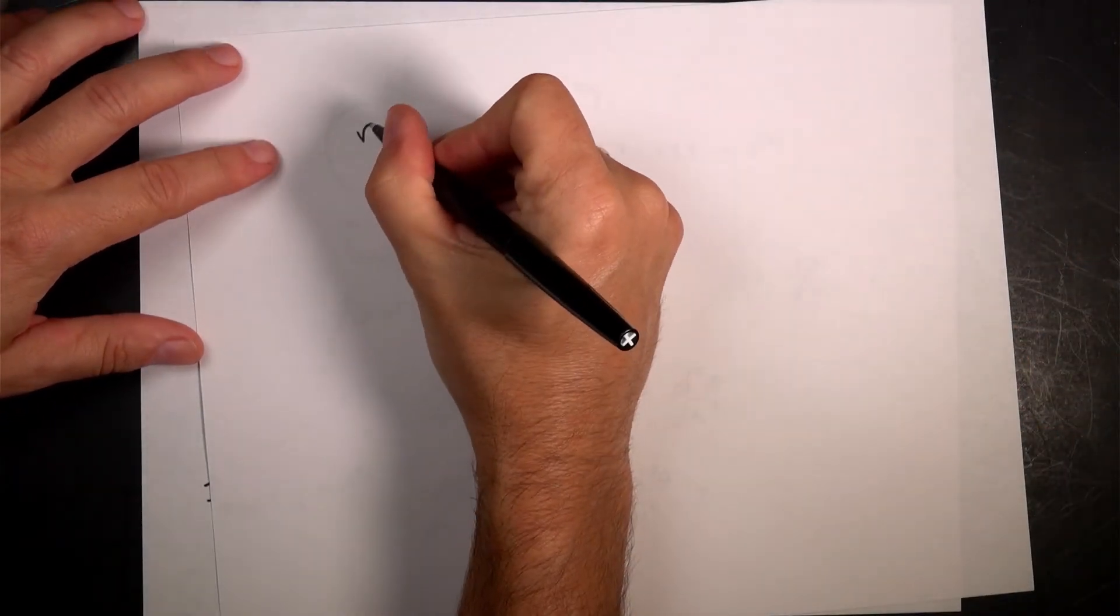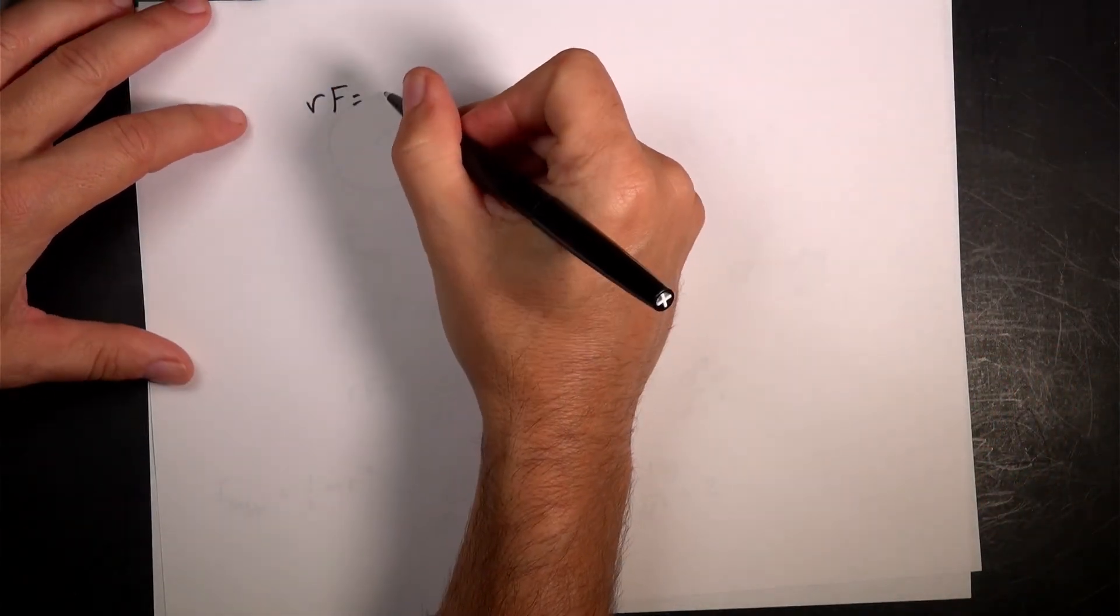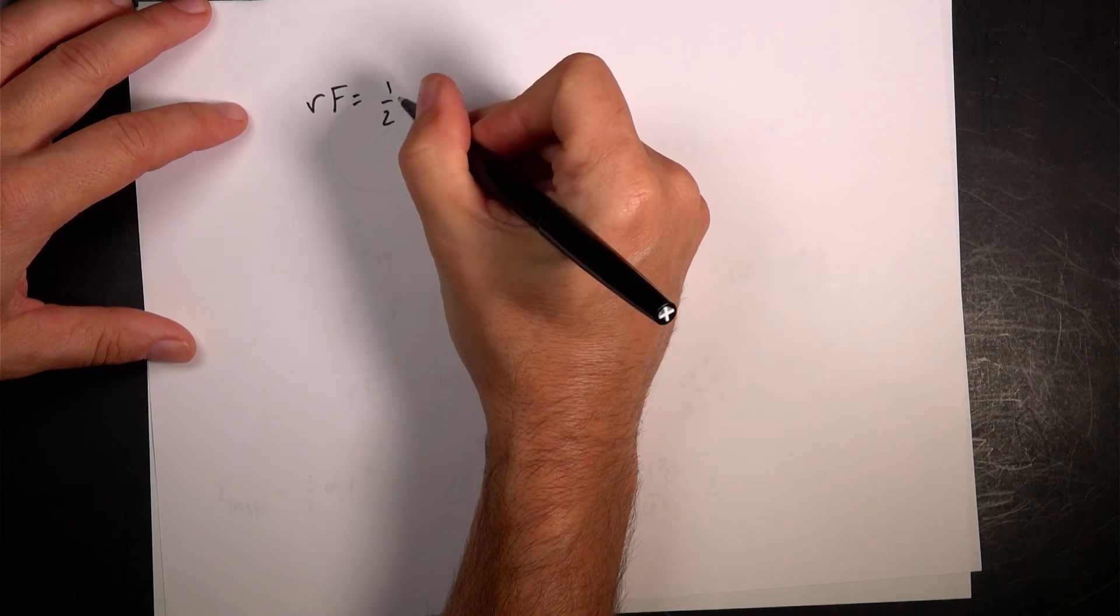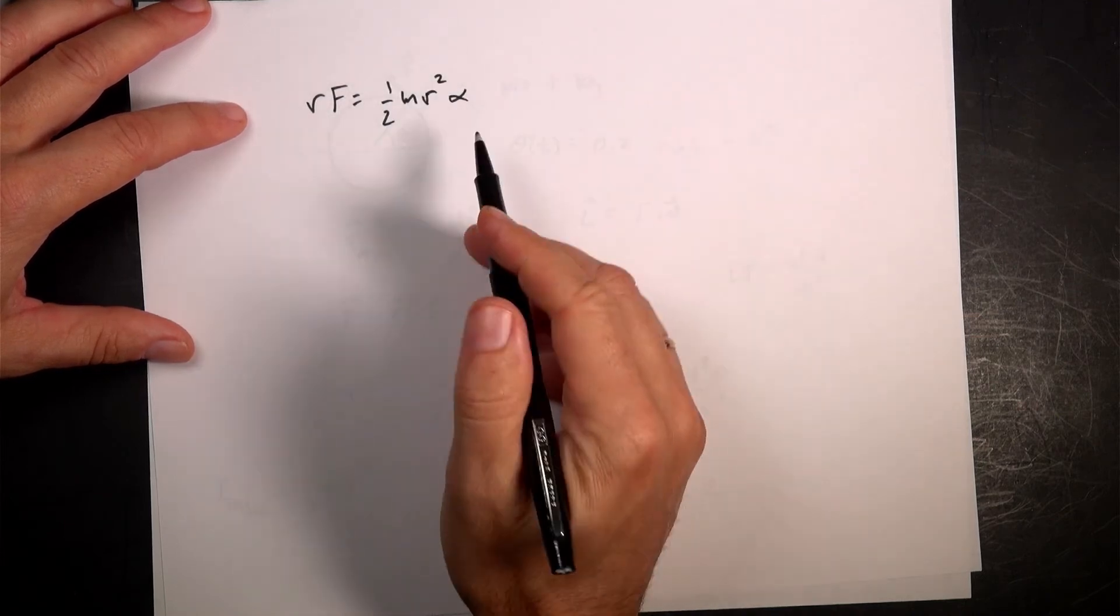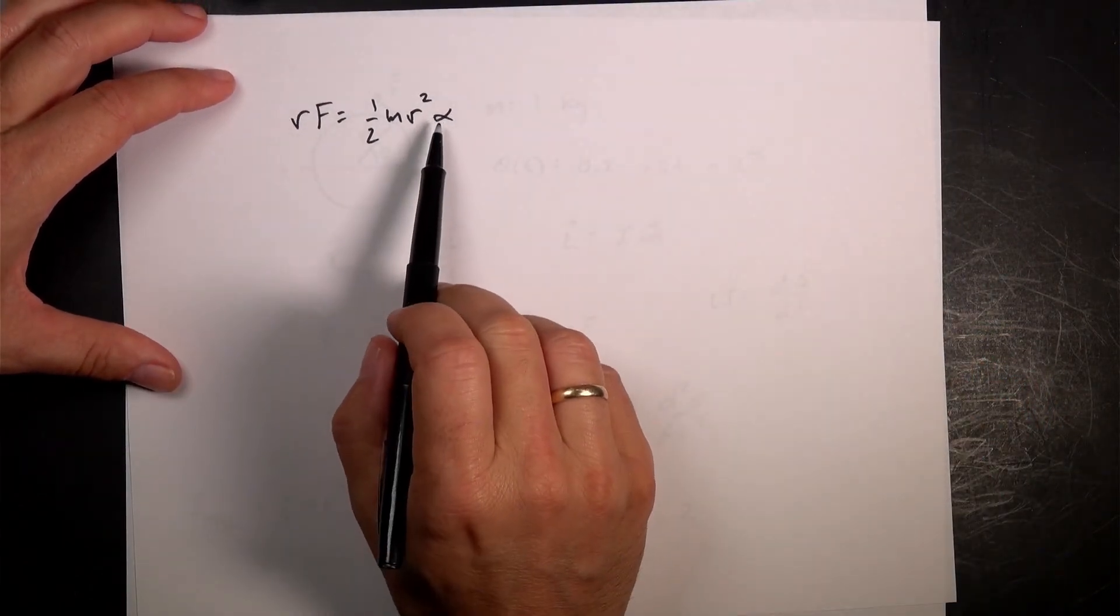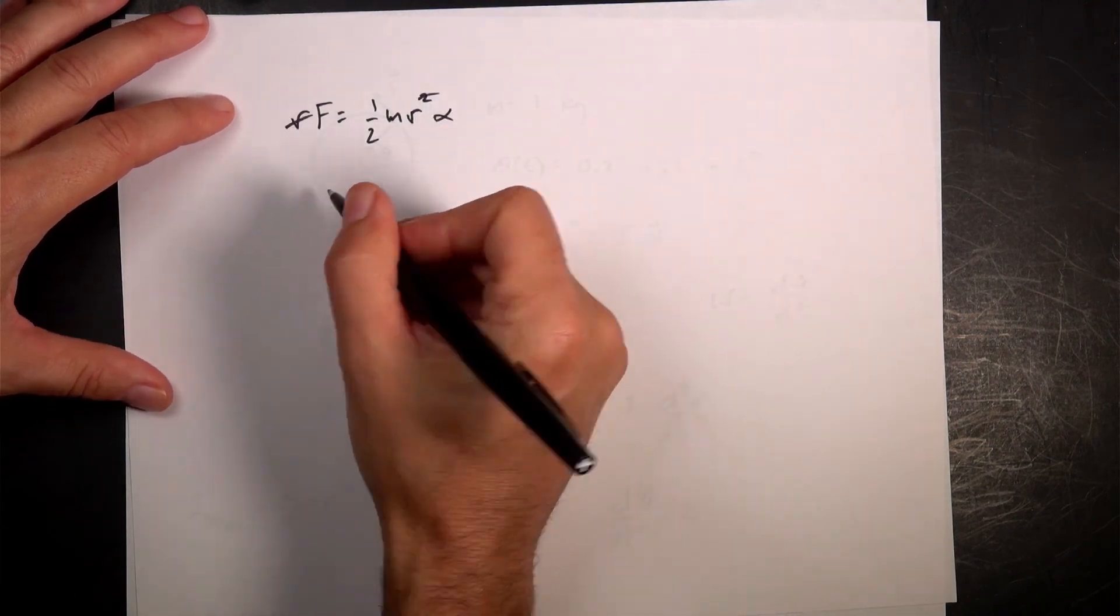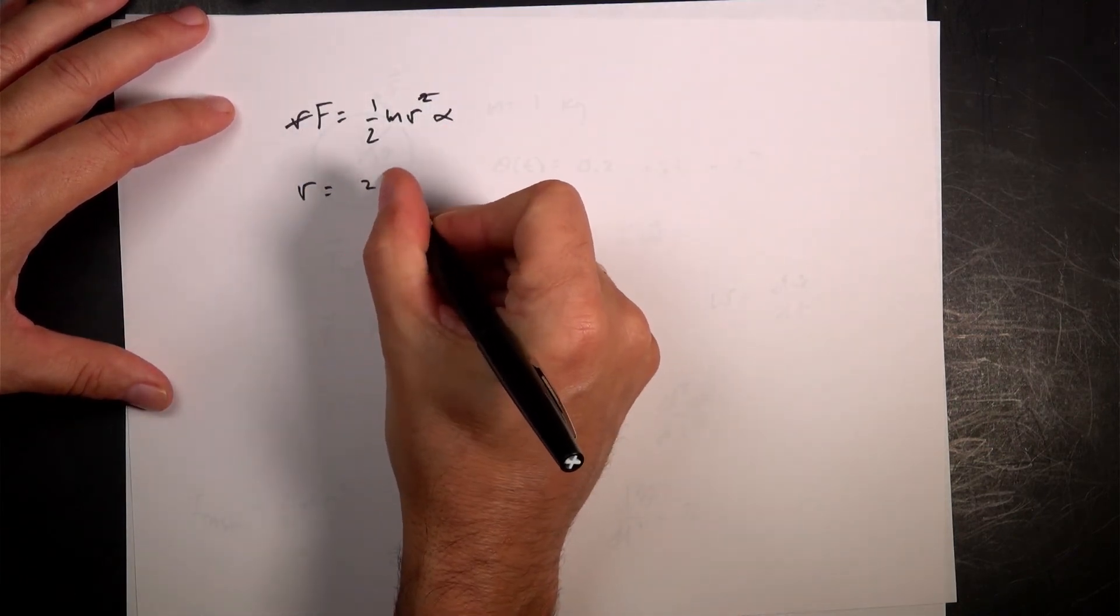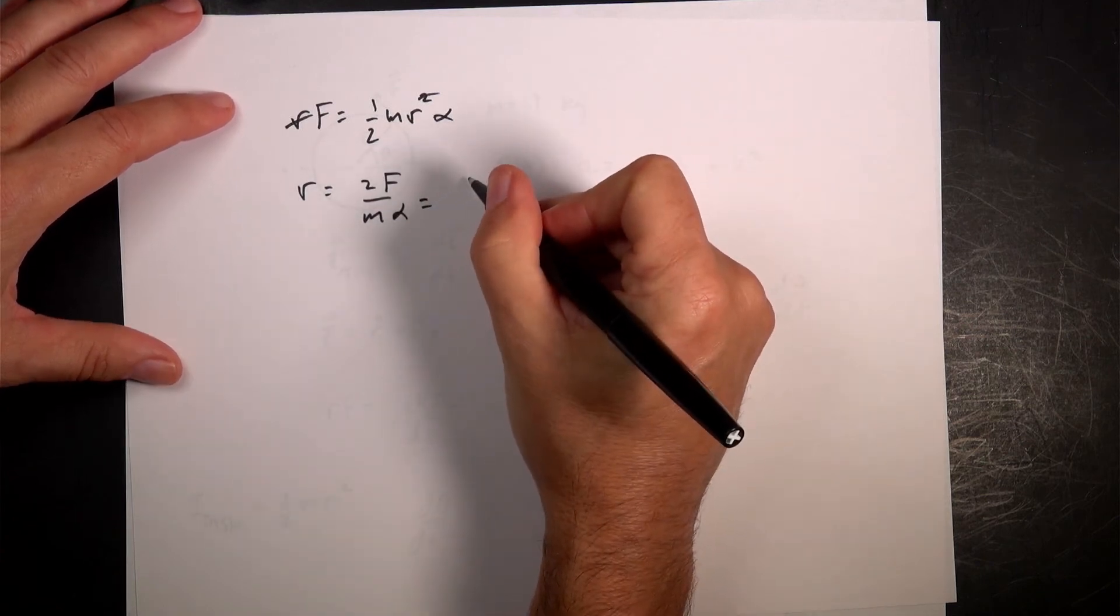So I have r times f. That's the torque. And that's going to be i, which is 1 half m r squared, times alpha, where alpha is the derivative of the angular velocity, which I know. I just found that's 2. And I want to solve for r, but the first thing I'm going to do is cancel this. And then so I'll say r is 2f over m alpha.